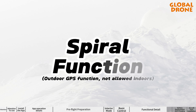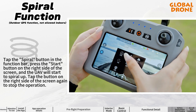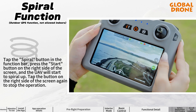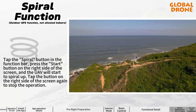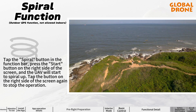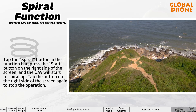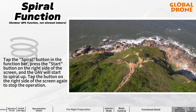Spiral function: tap the spiral button in the function bar and press the start button on the right side of the screen. The UAV will start to spiral up. Tap the button on the right side of the screen again to stop the operation.